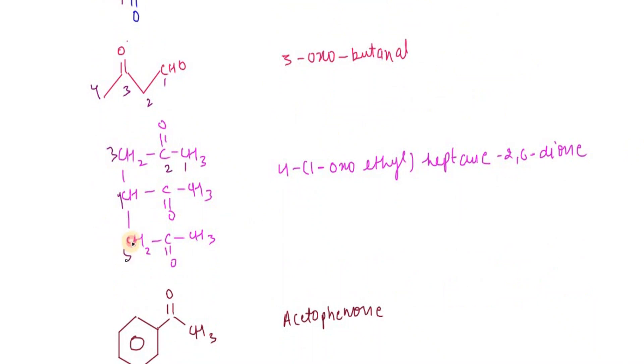For the longest carbon chain, numbering one through seven, this is 4-(1-oxoethyl)heptane-2,6-dione. That's how we name compounds where ketone groups are considered as substituents.